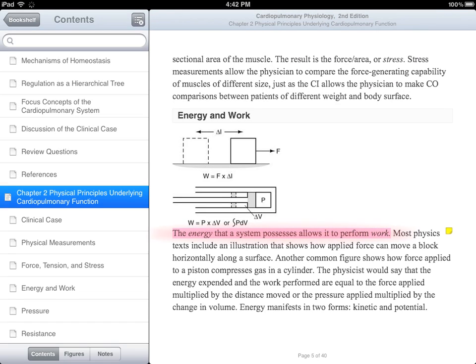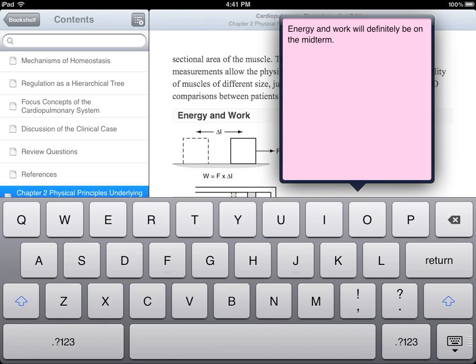To edit the note, tap anywhere on the highlighted passage. Then tap on the Edit Note button. A text box will then appear where you can edit your note. When done, tap outside of the box to return to the e-textbook.